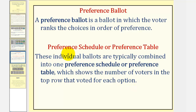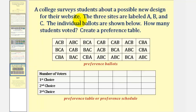Let's take a look at an example. A college surveys students about a possible new design for their website. The three sites are labeled A, B, and C. The individual ballots are shown below. So these ballots here would be called the preference ballots. Notice how the ballots rank the choices from first through third.